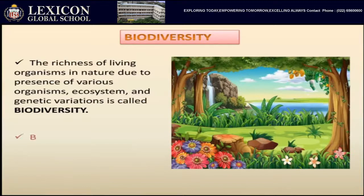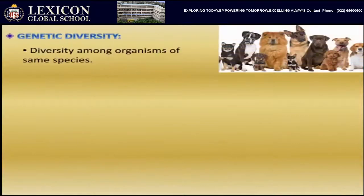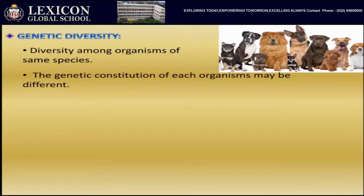Biodiversity occurs at three different levels. First is genetic biodiversity — all organisms belong to the same species but they are different breeds. The genetic constitution of each organism may be different. For example, as seen in the picture, all of them are dogs but they are different breeds — this is genetic biodiversity.